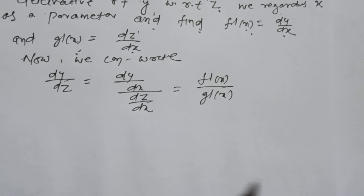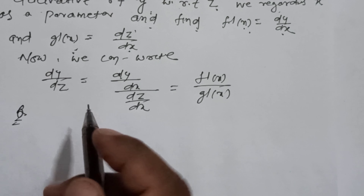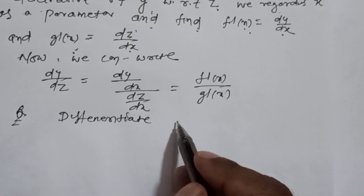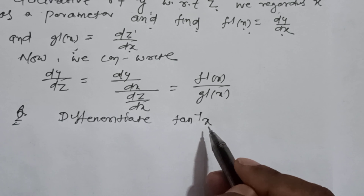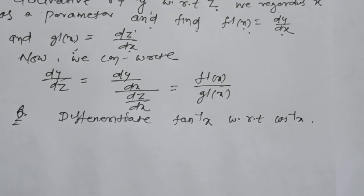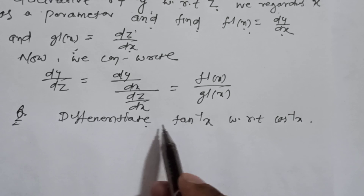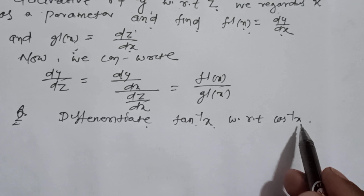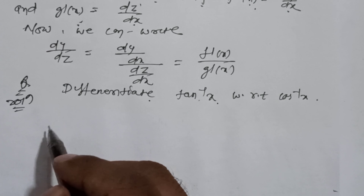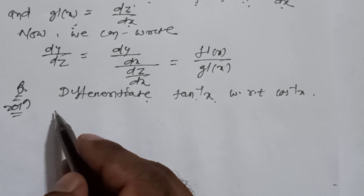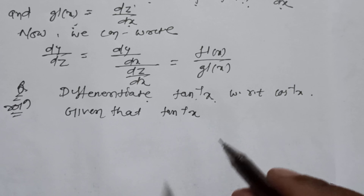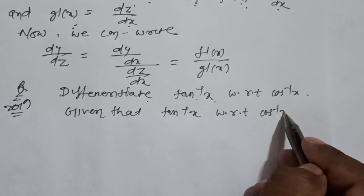Let's solve the first question. Given: differentiate tan⁻¹x with respect to cos⁻¹x. How to solve — write down the solution. Given that we need tan⁻¹x differentiated with respect to cos⁻¹x.